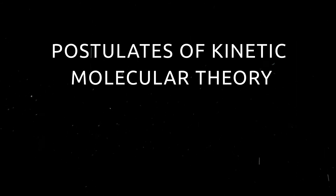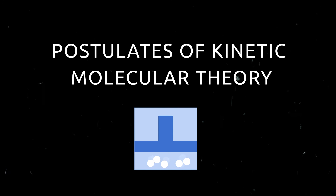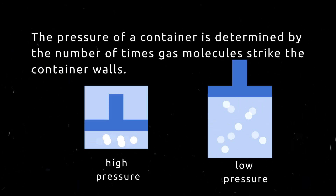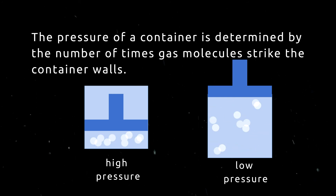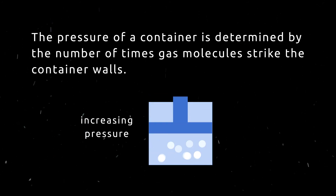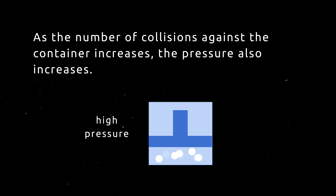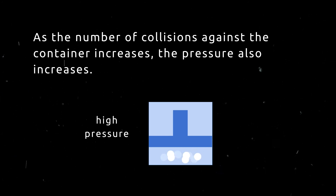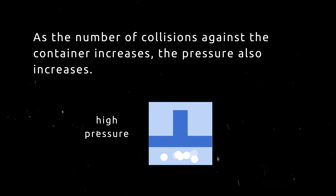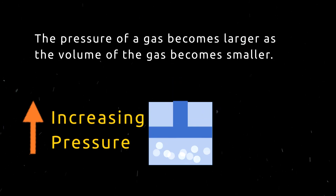Based on the postulates of the kinetic molecular theory, gases can be compressed because most of the volume of a gas is empty space. At a given temperature, the pressure of a container is determined by the number of times the gas molecules strike the container walls. If the gas is compressed to a smaller volume, the same number of molecules will strike against a smaller surface area, increasing the number of collisions and therefore increasing the pressure. Any increase in the frequency of collision with the walls leads to an increase in pressure, so the pressure of a gas becomes larger as the volume becomes smaller.